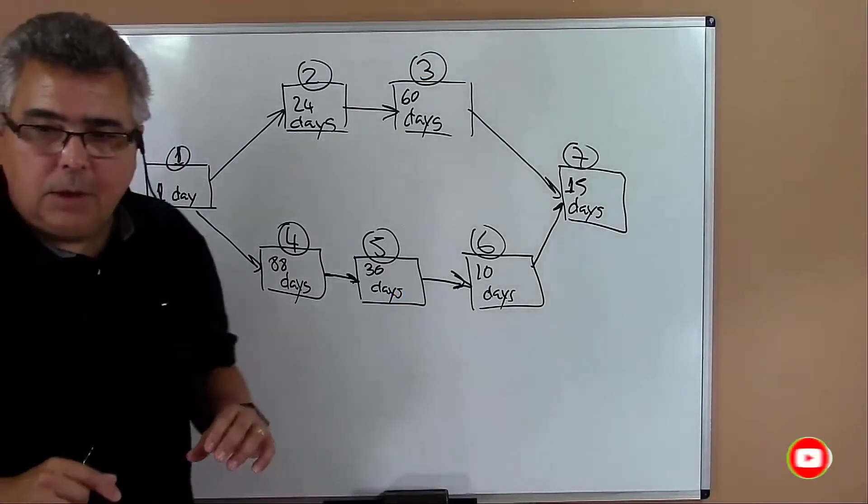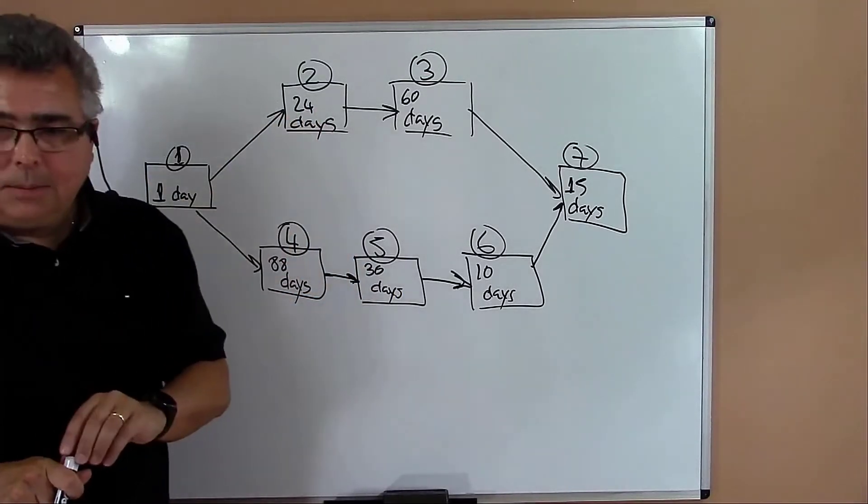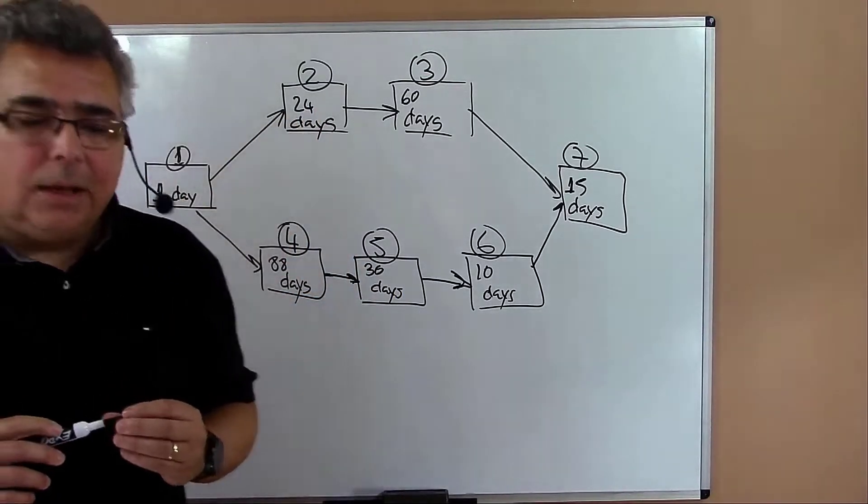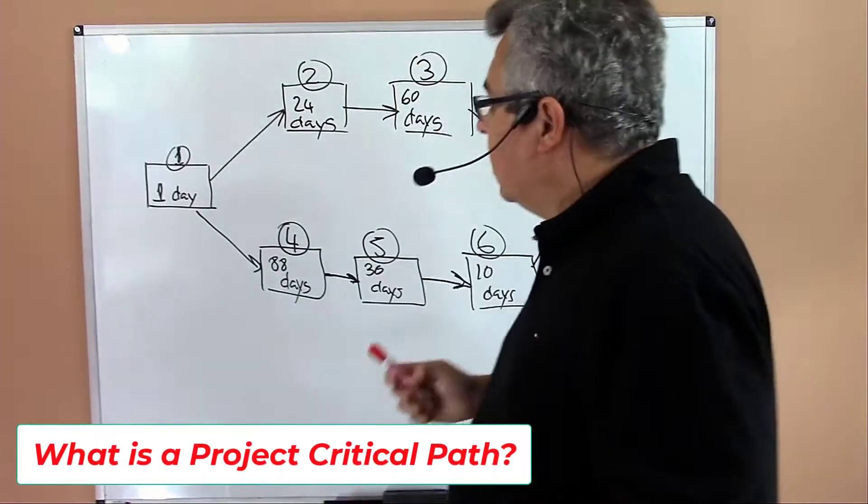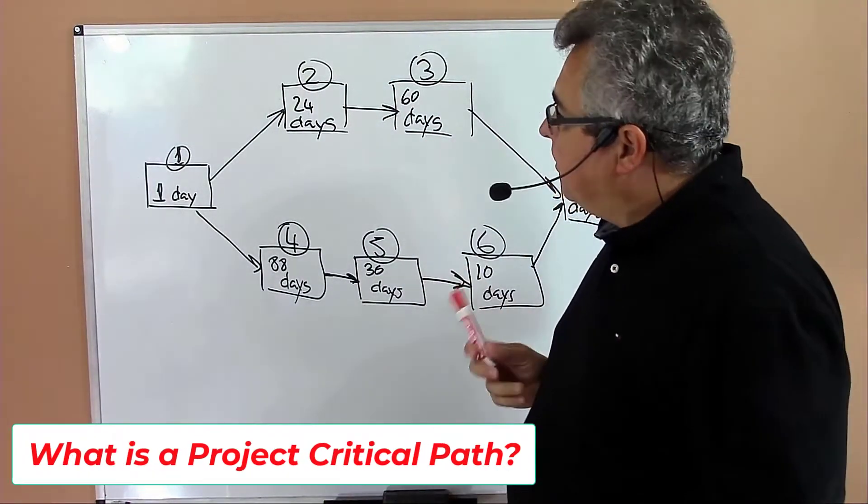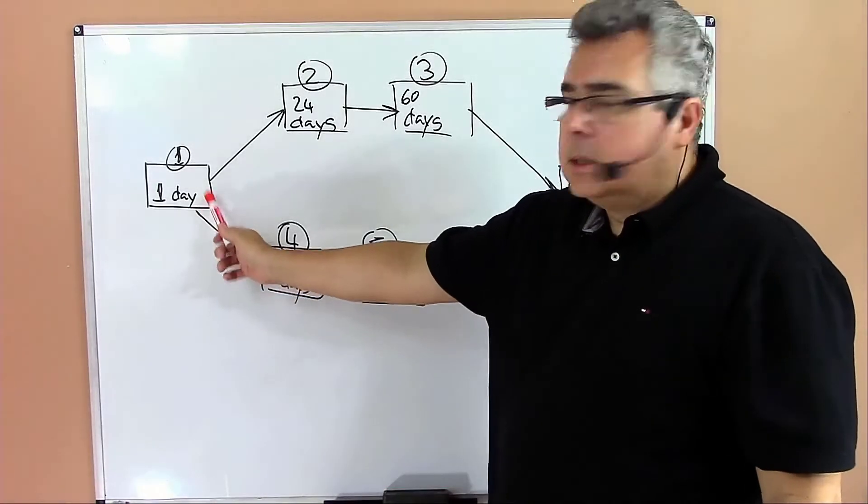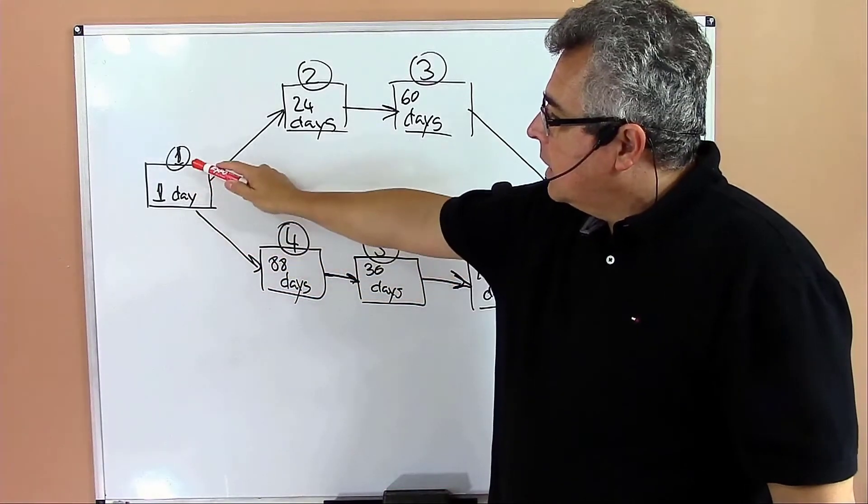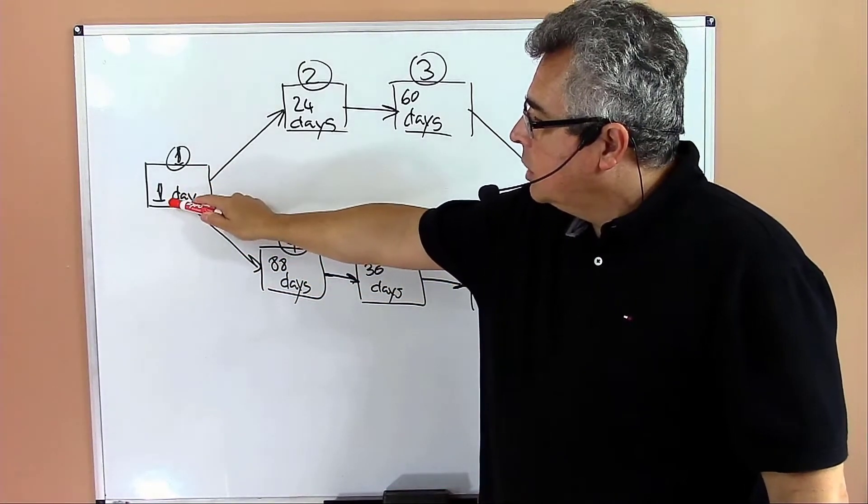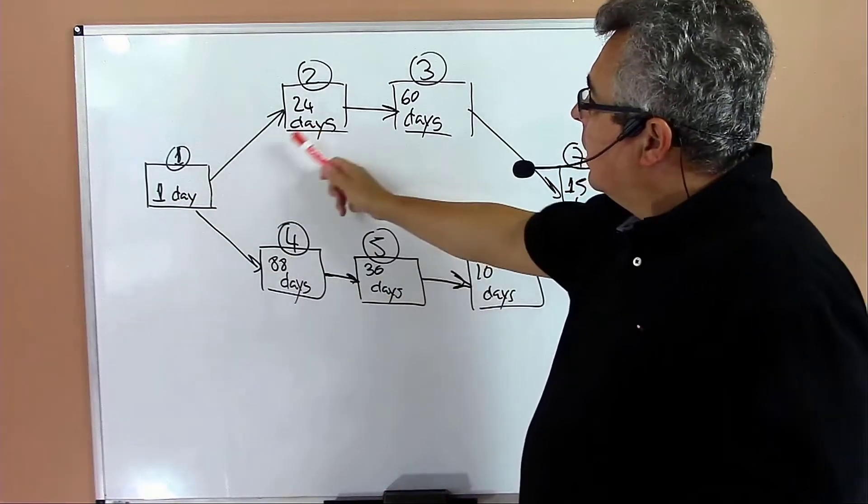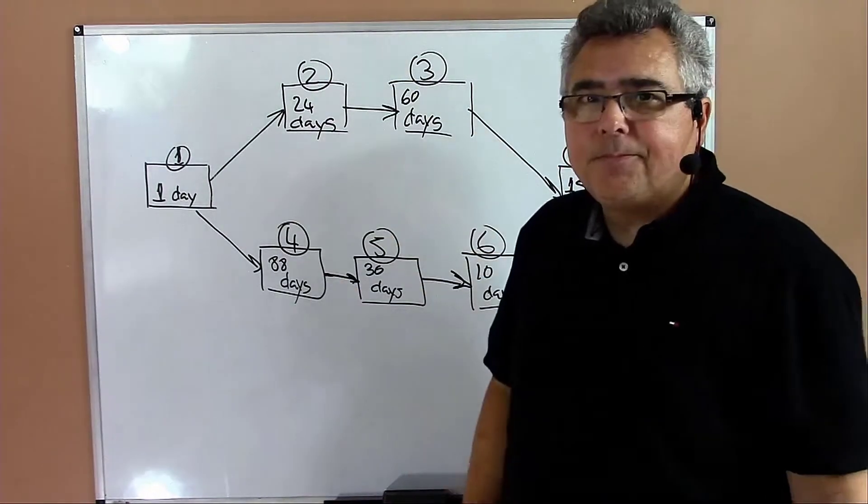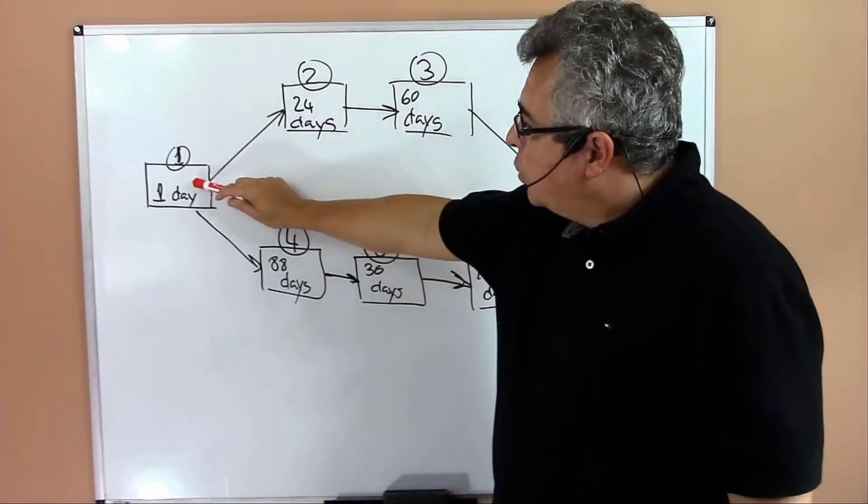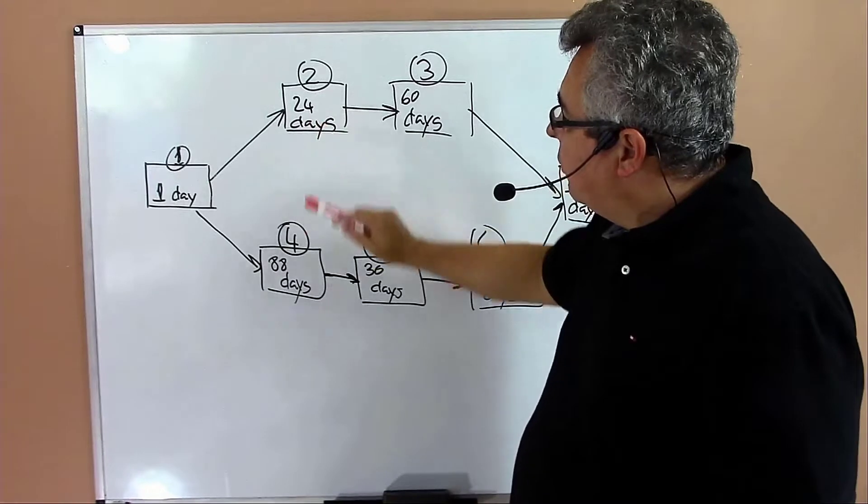So we have the project, let's understand and read that project. The first task is that activity one has a duration of one day. Once I finish activity one, I can start activities two and four. So activity one is a predecessor of two and four.